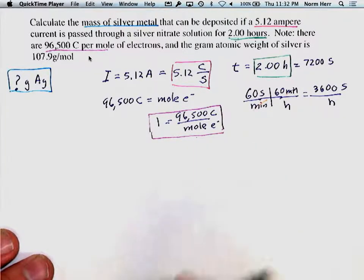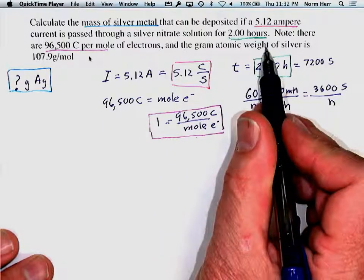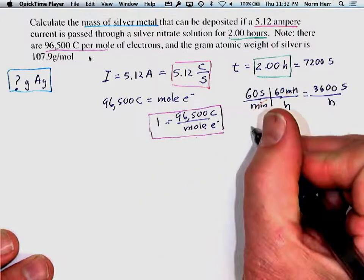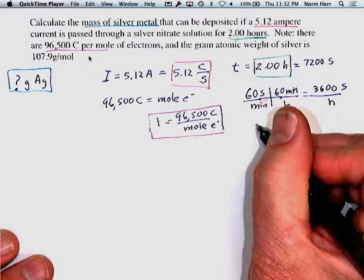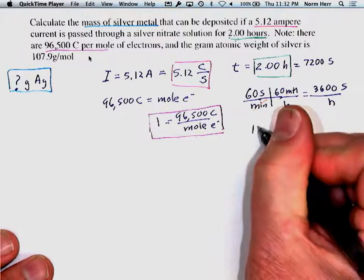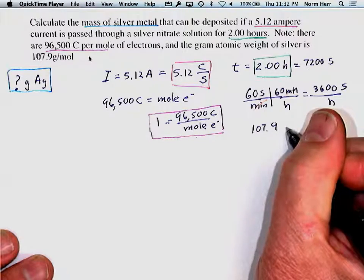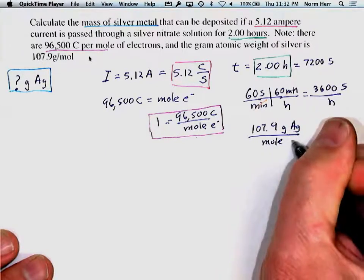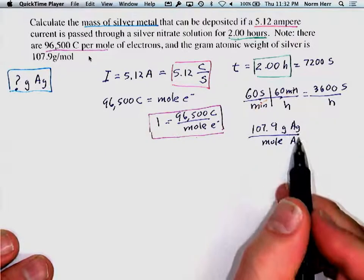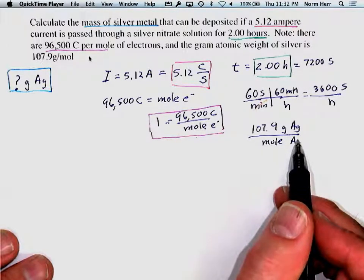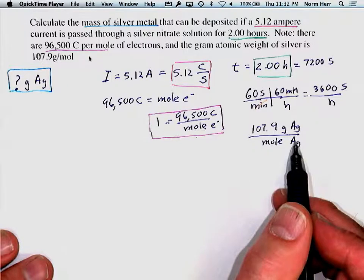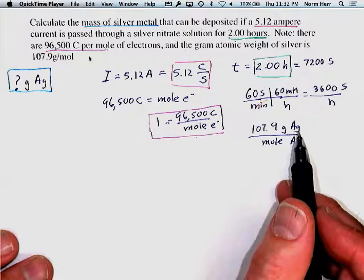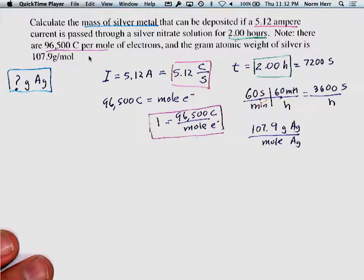Finally, we have the gram atomic weight of silver, which we could pull from the periodic table. The gram atomic weight of silver is 107.9 grams of silver per mole of silver. It's important to keep track that we're talking about the gram atomic weight of silver specifically, not some other substance.